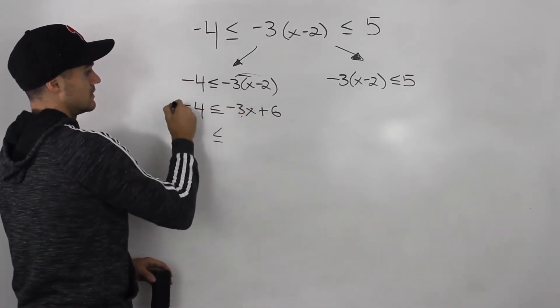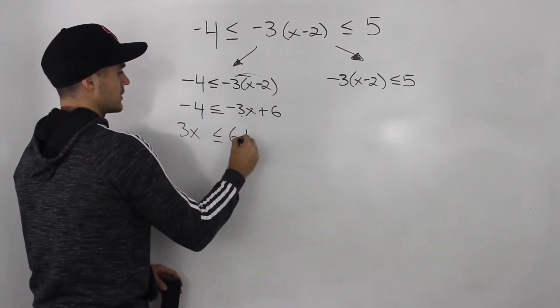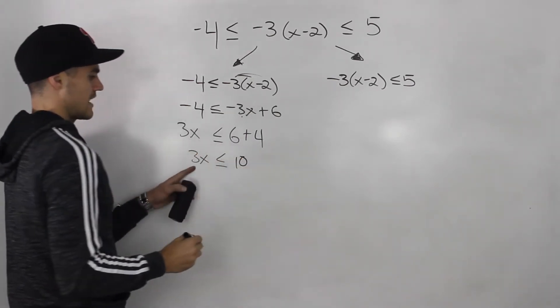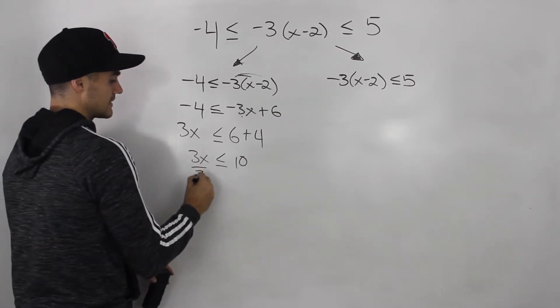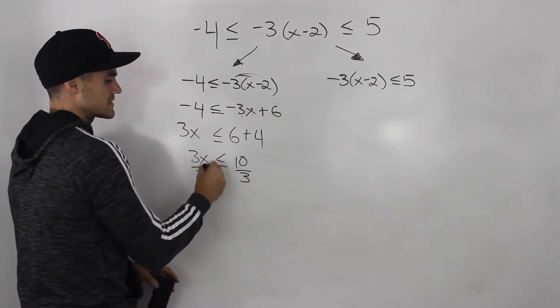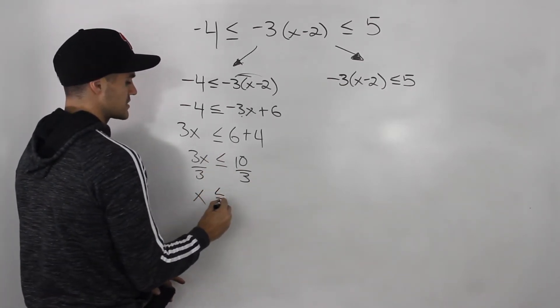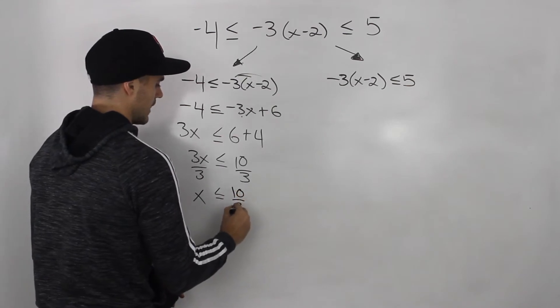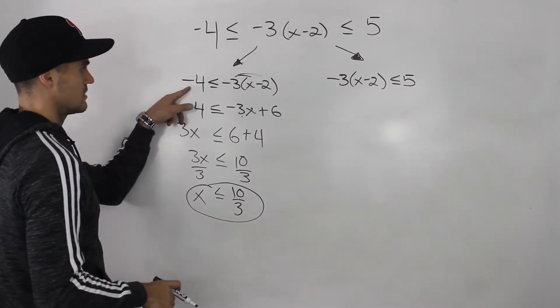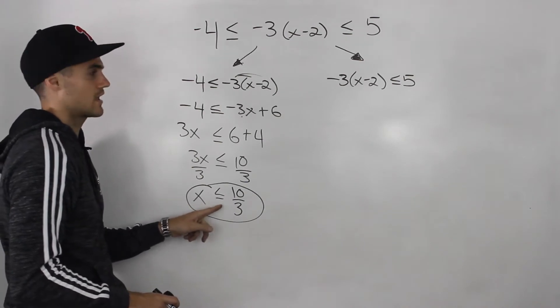So notice we have this negative 3x. Let's bring it over and make it positive. Then this negative 4 comes over, becomes positive. And the reason why you want to try to have these x values positive, so when we isolate for it, when we divide by that coefficient in front, we don't have to worry about flipping the sign. Because if this was negative, we would have to flip the sign. And that's just another thing to keep in mind, and it increases the chance to make a mistake. So the solution to this inequality, this linear inequality, is x is less than or equal to 10 over 3.